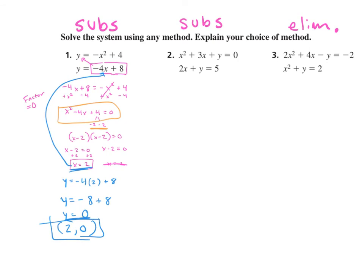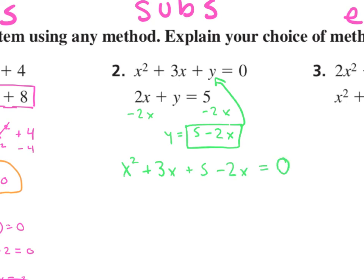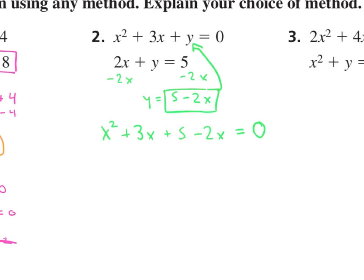You can always use the quadratic formula instead of factoring, and you'd get the same answer. For number 2, we solve by substitution. We subtract 2x from both sides of the linear equation: y equals 5 minus 2x. Now we substitute that into the first equation: x squared plus 3x plus (5 minus 2x) equals 0. Combining like terms: 3x minus 2x gives x, so we have x squared plus x plus 5 equals 0.